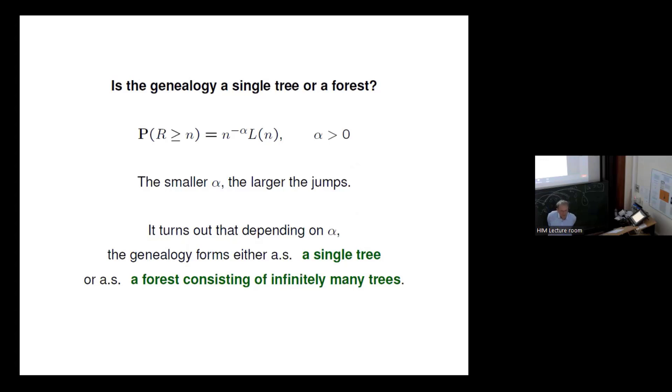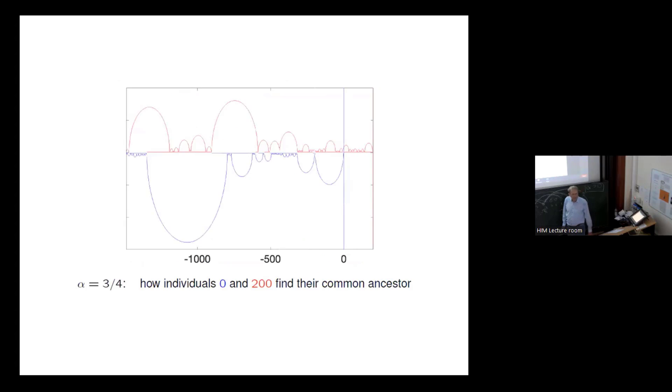Now first question: Is the genealogy a single tree or a forest consisting of many trees? You see this will depend on the alpha because the smaller the alpha, the longer the tails, that is the bigger the jumps. So for small alpha we would expect to have not just one forest, it might be that the genealogical lines miss each other, and for bigger alpha we might expect that they find them.